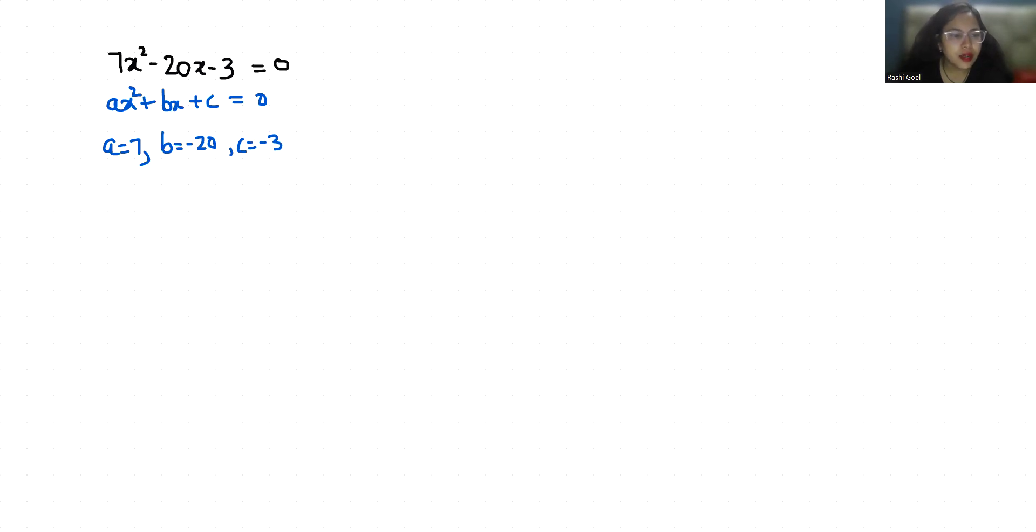First, I am going to find the discriminant with the help of the formula b square minus 4ac. There are three possibilities. If it is greater than zero, positive, then two real solutions exist.